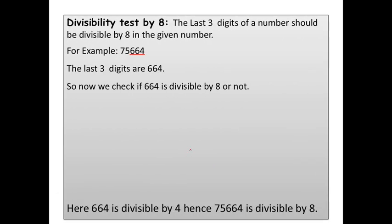Now, let us see the divisible test by 8. The last 3 digits of a number should be divisible by 8 in the given number. For example, 75,664. The last 3 digits are 664. So, now we will check that 664 is divisible by 8 or not. 8 8s are 64 minus 2. 8 3s are 24 minus 0 0. Hence, the 664 is divisible by 8. So, the number 75,664 is also divisible by 8.